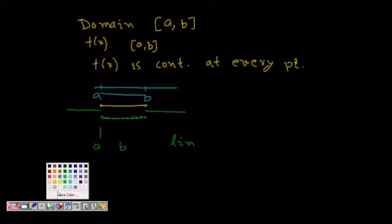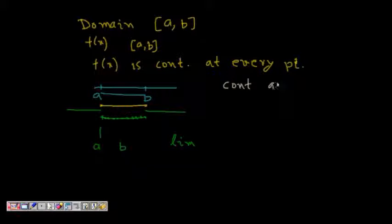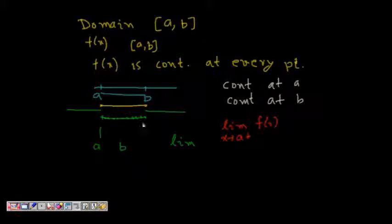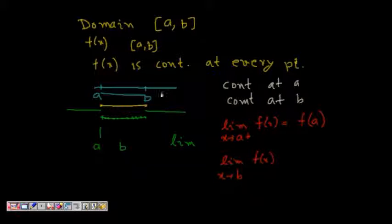We need to define continuity at points a and b separately. For continuity at a: the right-hand limit, limit of f(x) as x tends to a from the positive side, should equal f(a). For continuity at b: the left-hand limit, limit of f(x) as x tends to b from the negative side, should equal f(b), since we are not considering the right-hand side of b.